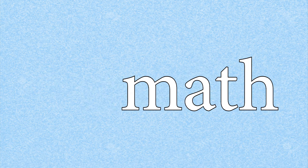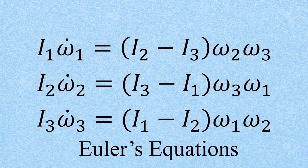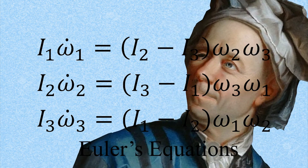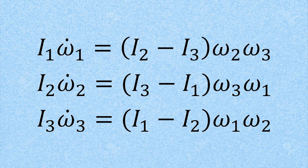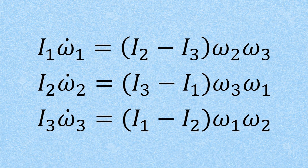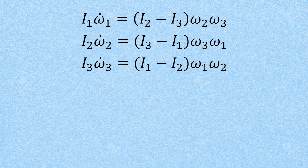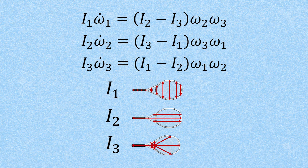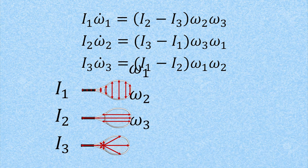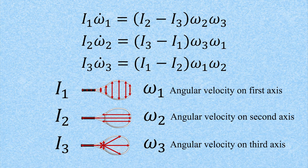Okay, so we've understood the physical concepts, but what about the math? A good place to start are Euler's equations. Developed by the great Leonard Euler, they describe the rotation of a rigid body under torque-free conditions. The I's represent the moments of inertia with regards to each axis, and the omegas represent the angular velocities, meaning how fast our object is spinning.